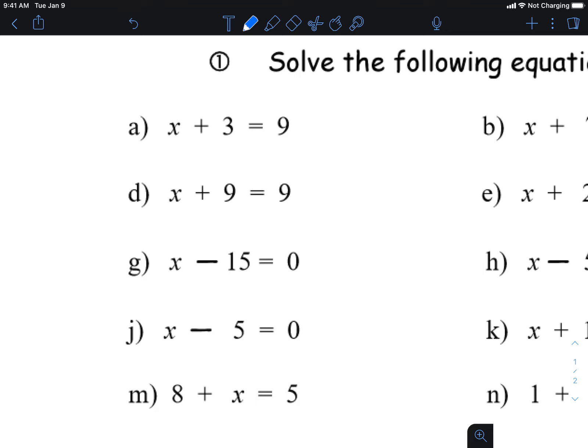Okay, if I see that there's a plus three, then I can always do the opposite thing, so I can go minus three. But what I do to one side I have to do to the other, so I got a minus three over on this side.